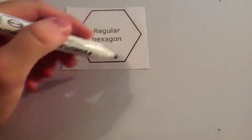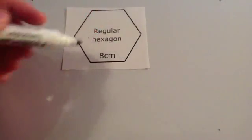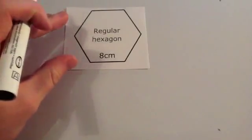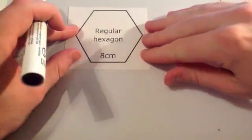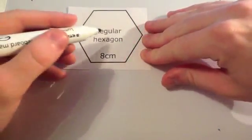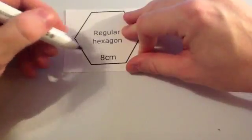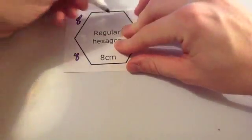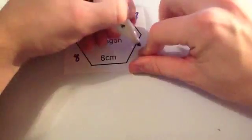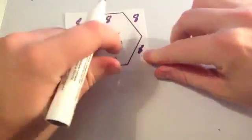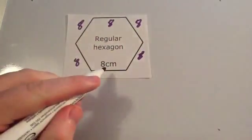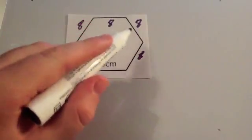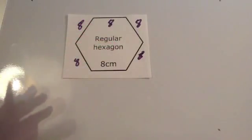We're now going to find the perimeter of this regular hexagon. To find the perimeter of a regular hexagon, you're going to add together all six sides. Because it's regular, all of the sides are the same. Because this one's eight centimetres, it means all of them are eight centimetres long — this side, this side, this side, this side, this side, this side. All of those sides are eight centimetres.